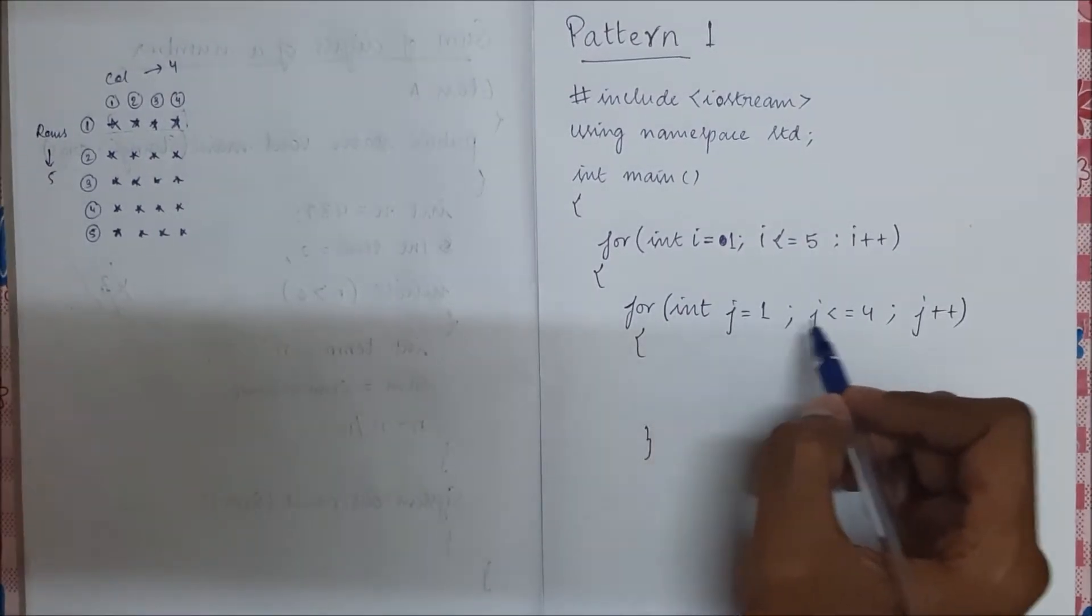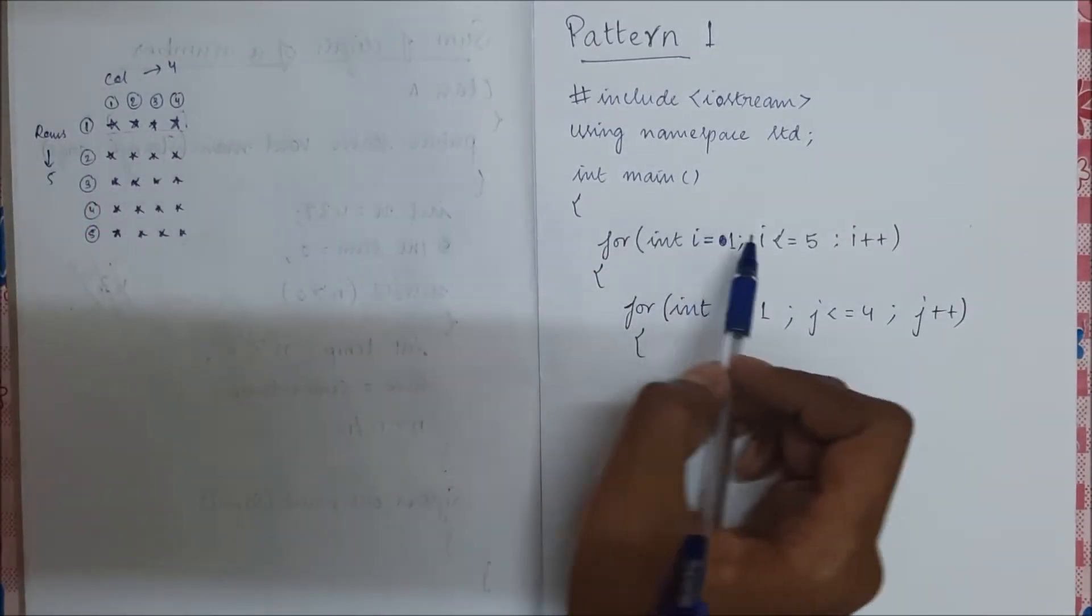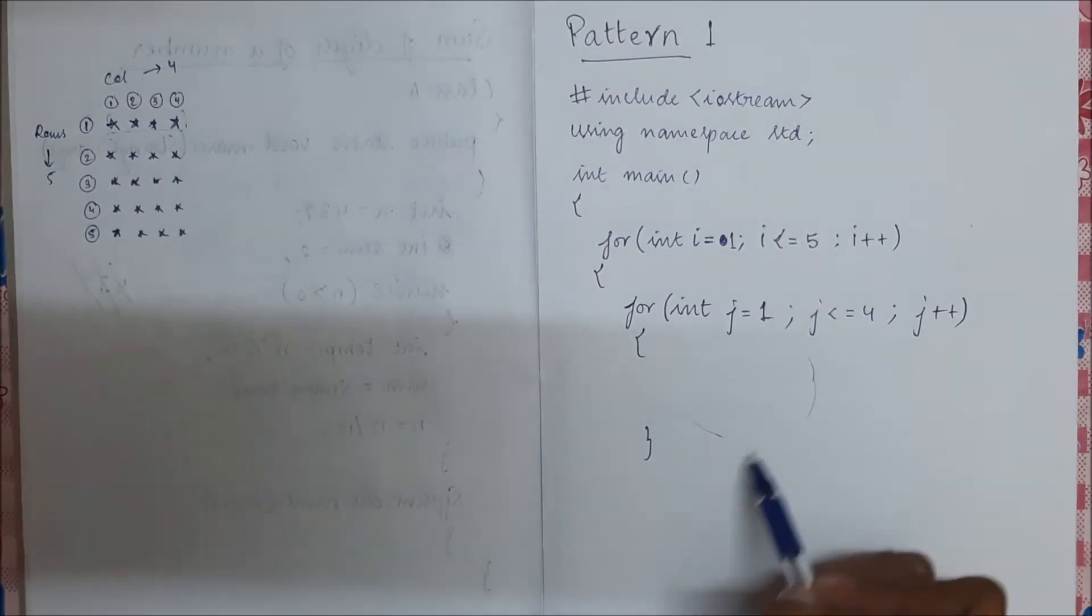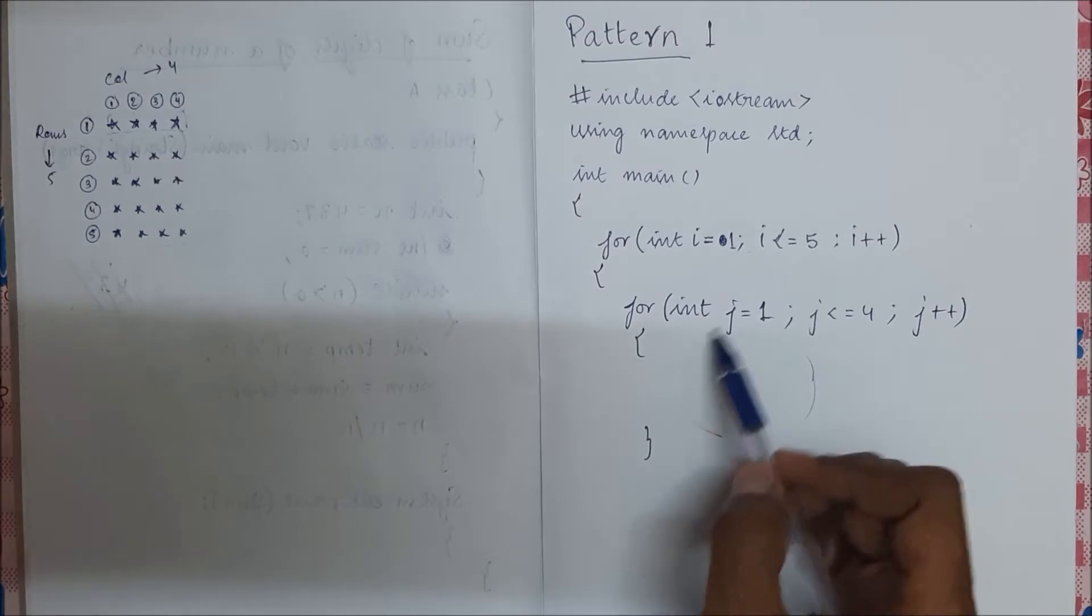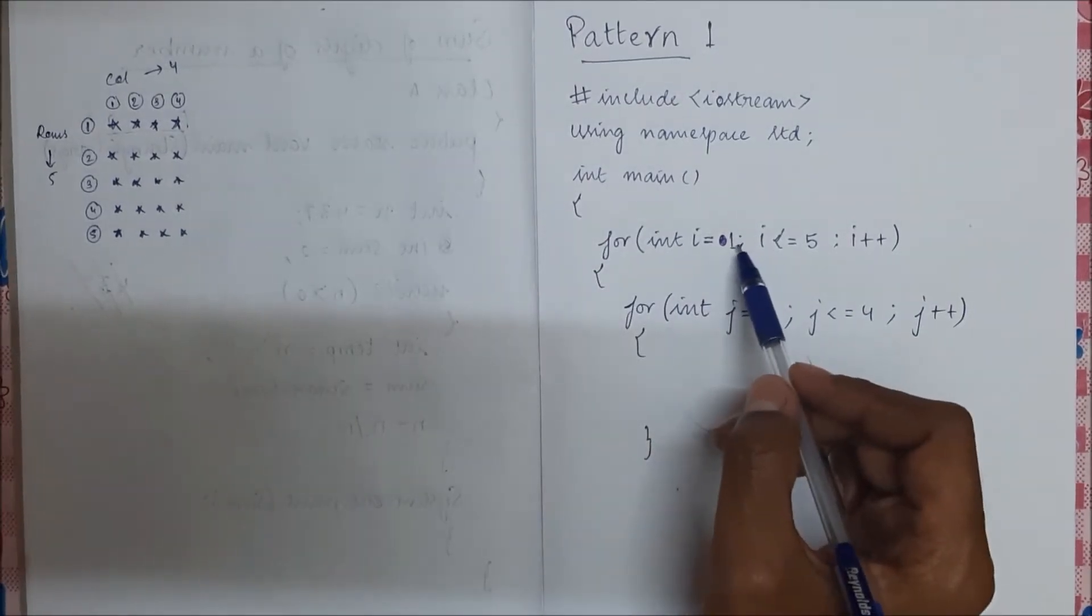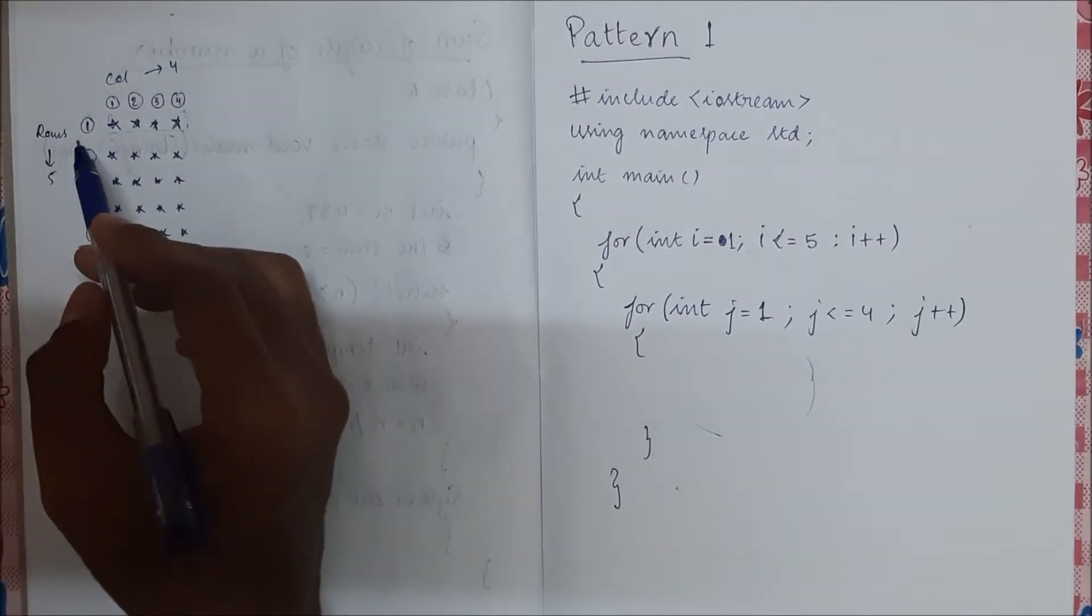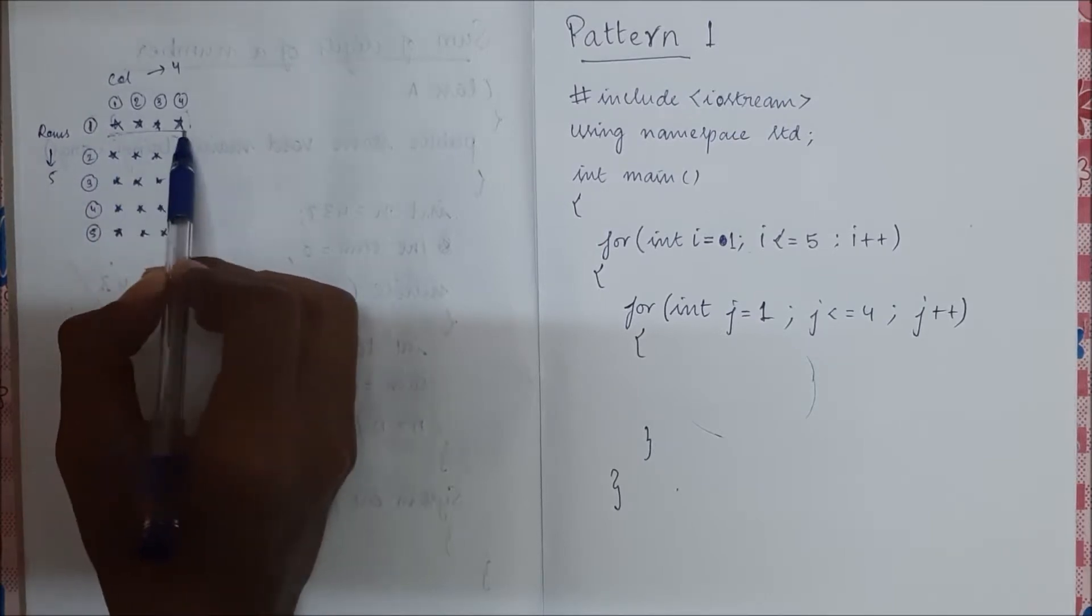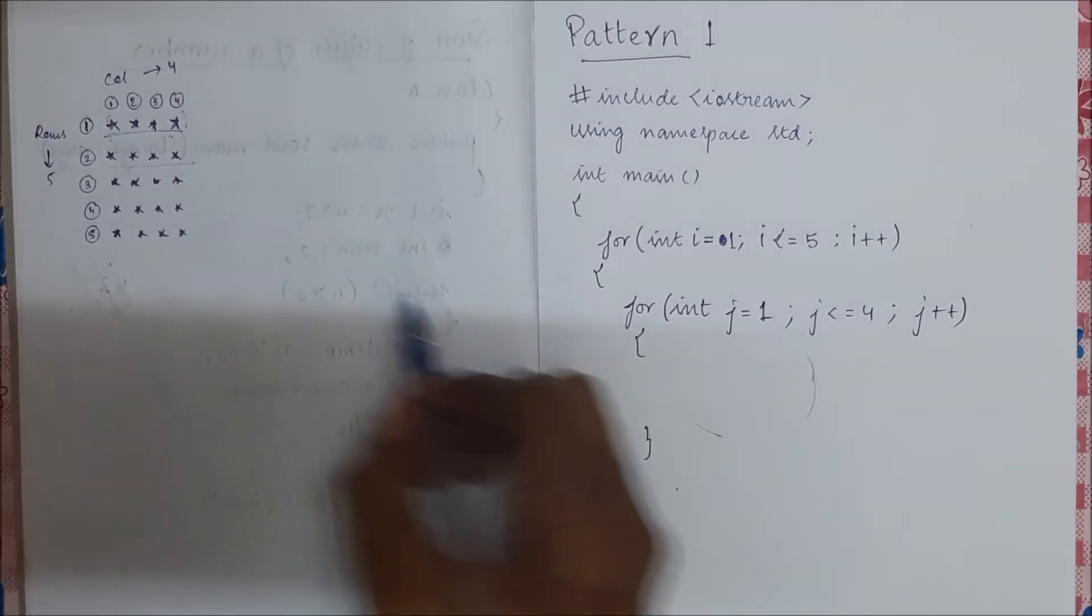So when i equal to one, j will run from one to four. That is, for i equal to one, j will run four times, then i will become two, then j will run for four times. This will continue. So here we see for row number one, column should move four times. Row number two, four times. So that is what I have written here.